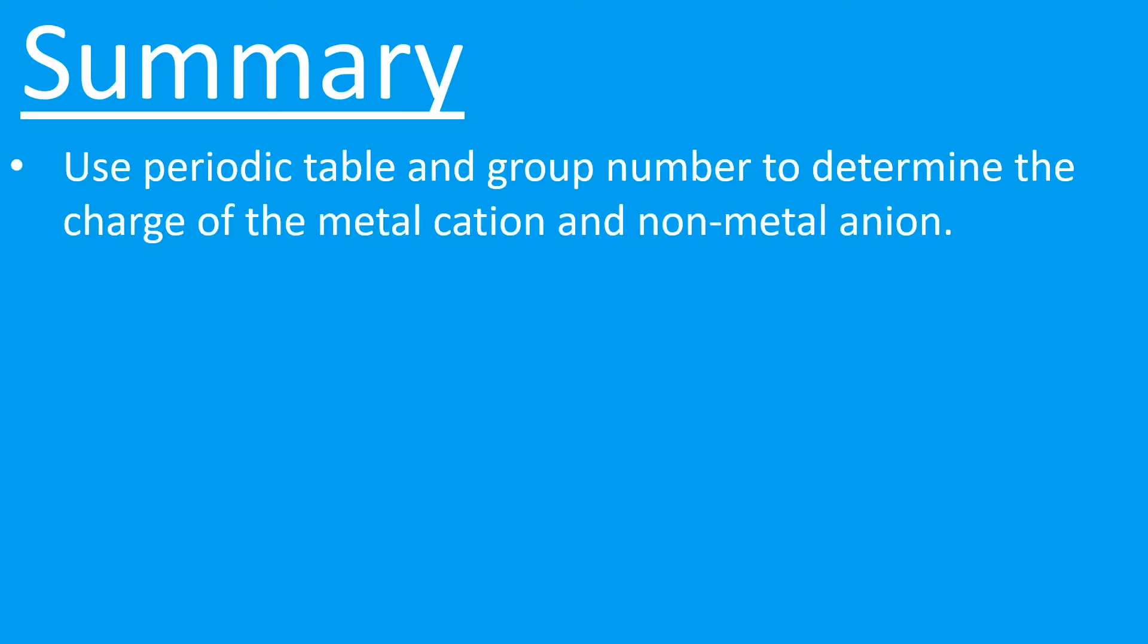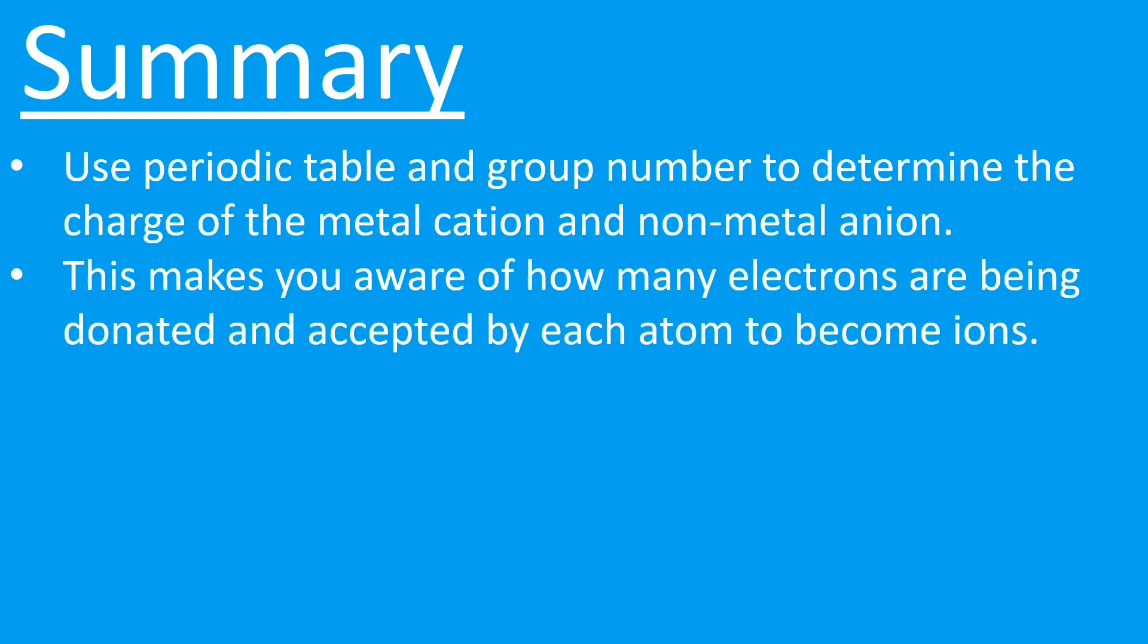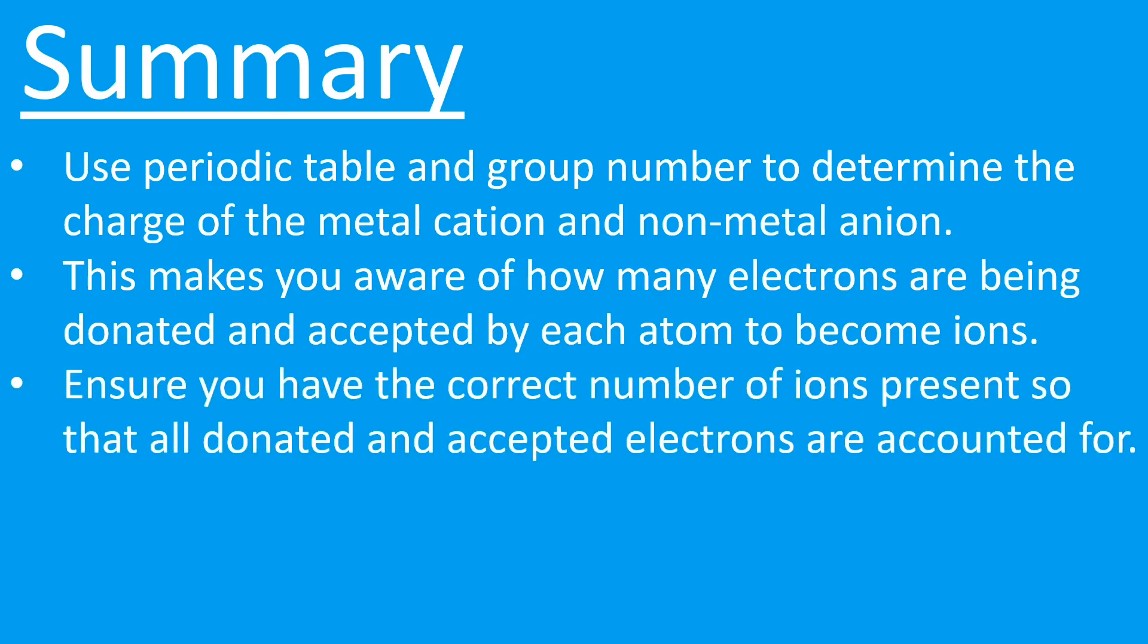Let's summarize the key points. You must be using your periodic table and in particular the group number to determine the charge of your metal and your non-metal. This makes you aware of how many electrons are being donated and how many are being accepted. You should then use this number to ensure that all electrons are accounted for and you have the correct number of ions present in your compound.